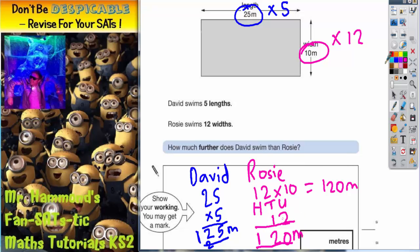Now the question actually then says, how much further does David swim than Rosie? Well, David's swimming 125 metres. Rosie's swimming 120 metres. So how much further is 125 than 120?